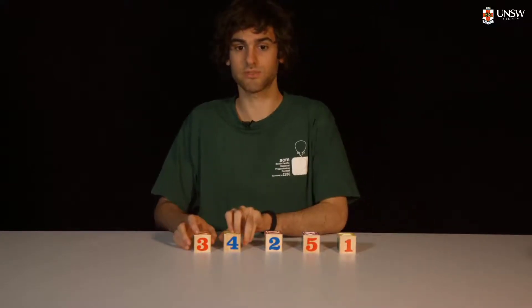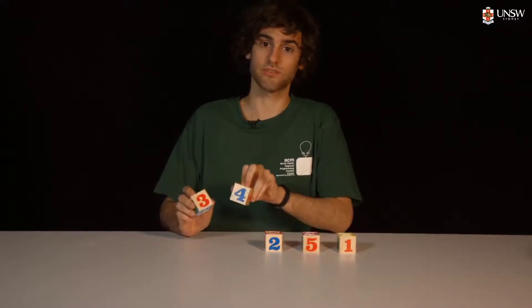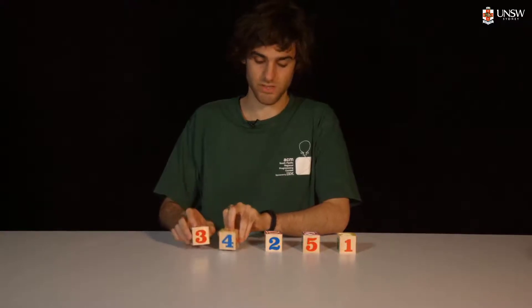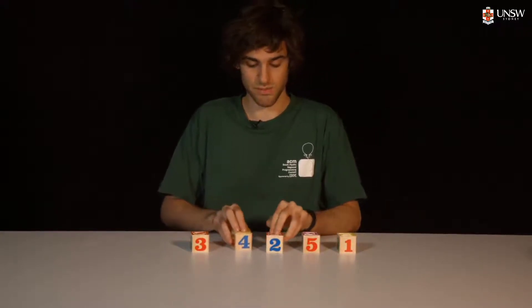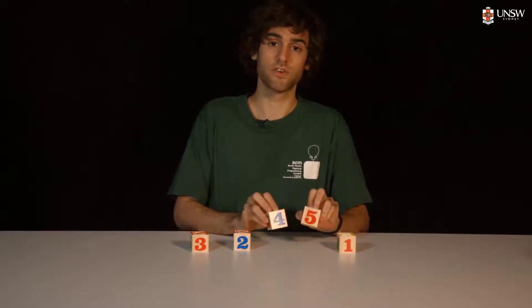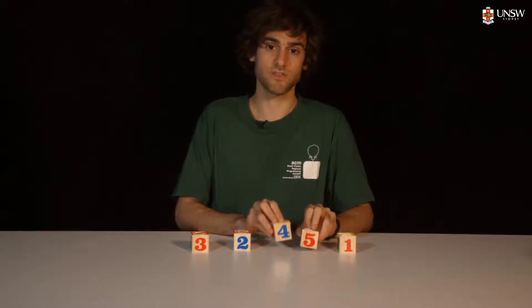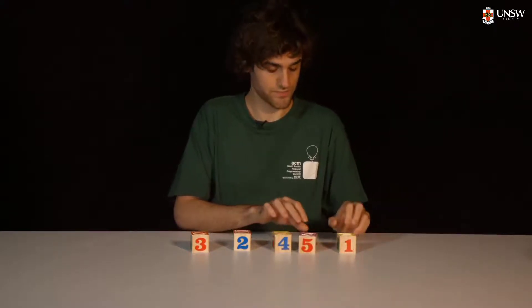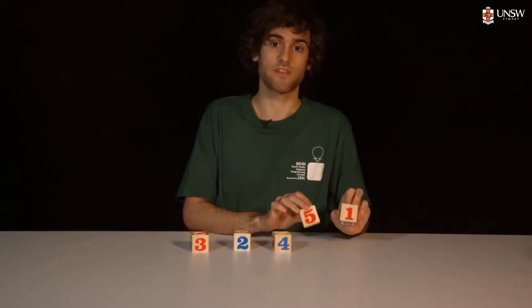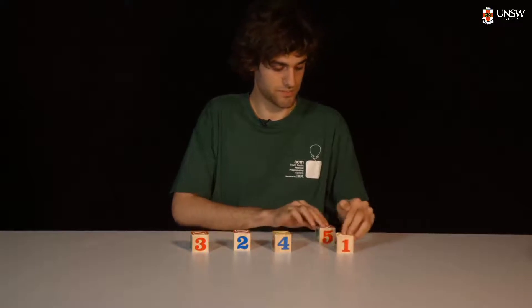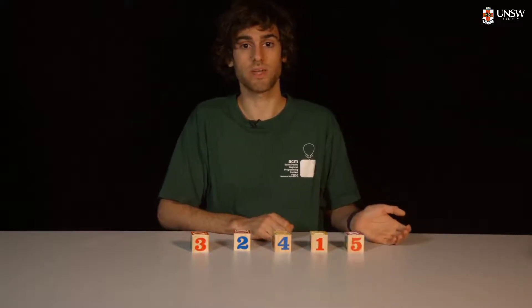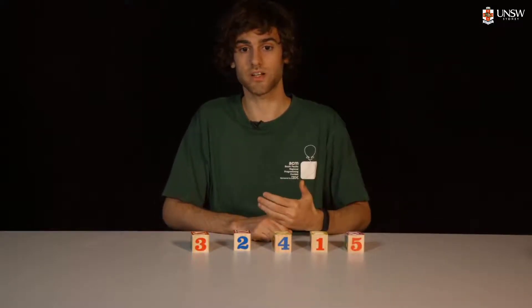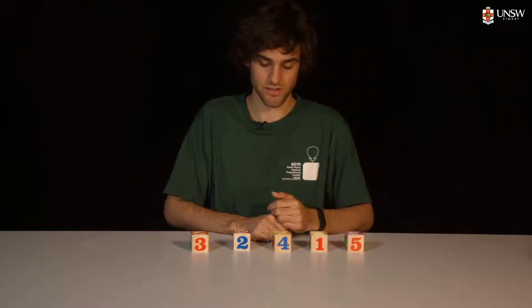So for example, we take three and four. Three is smaller than four, so we continue. Four is bigger than two, and so we swap them. Four is smaller than five, so we continue. And then five is bigger than one, so we swap it. And now we want to repeat this another three times since our list is of size five.